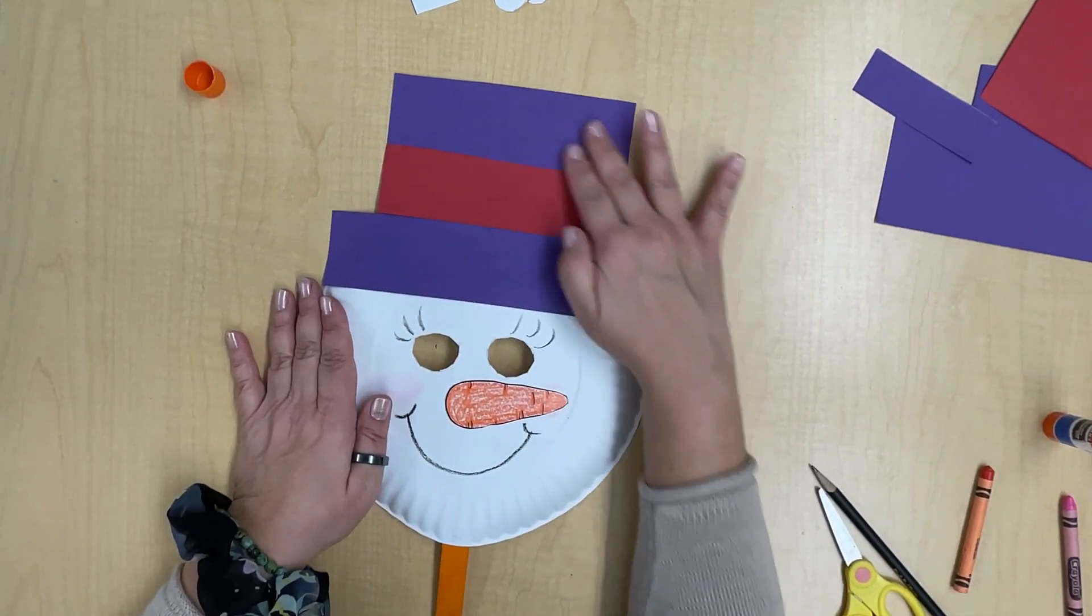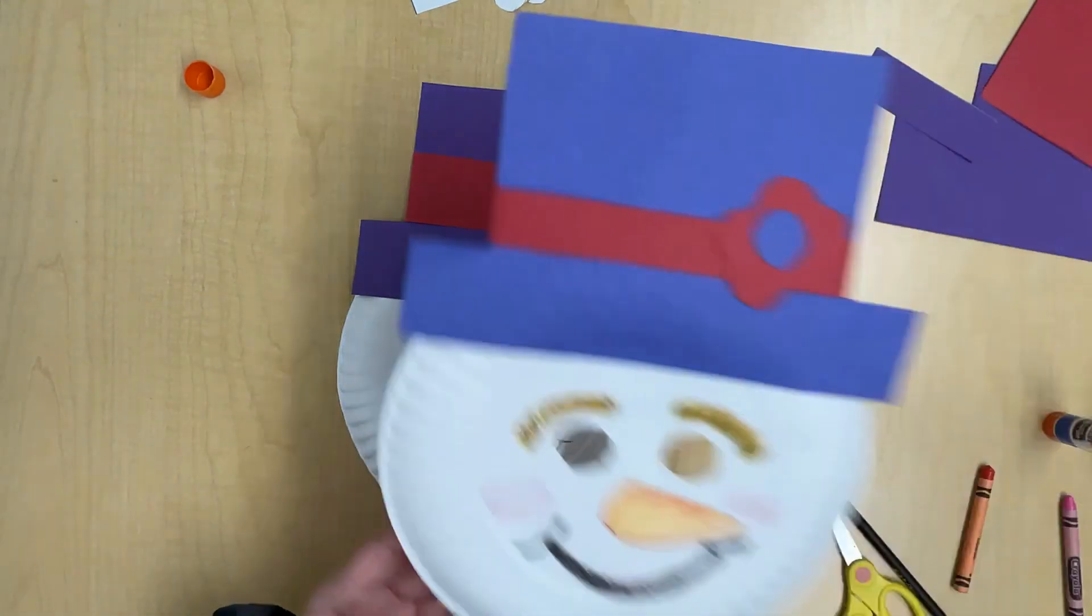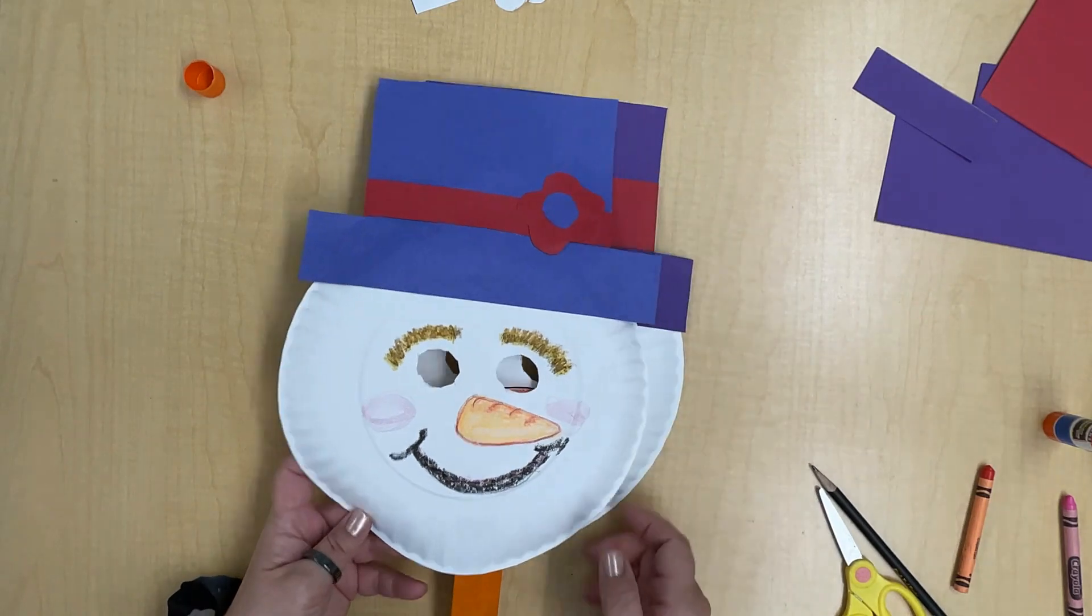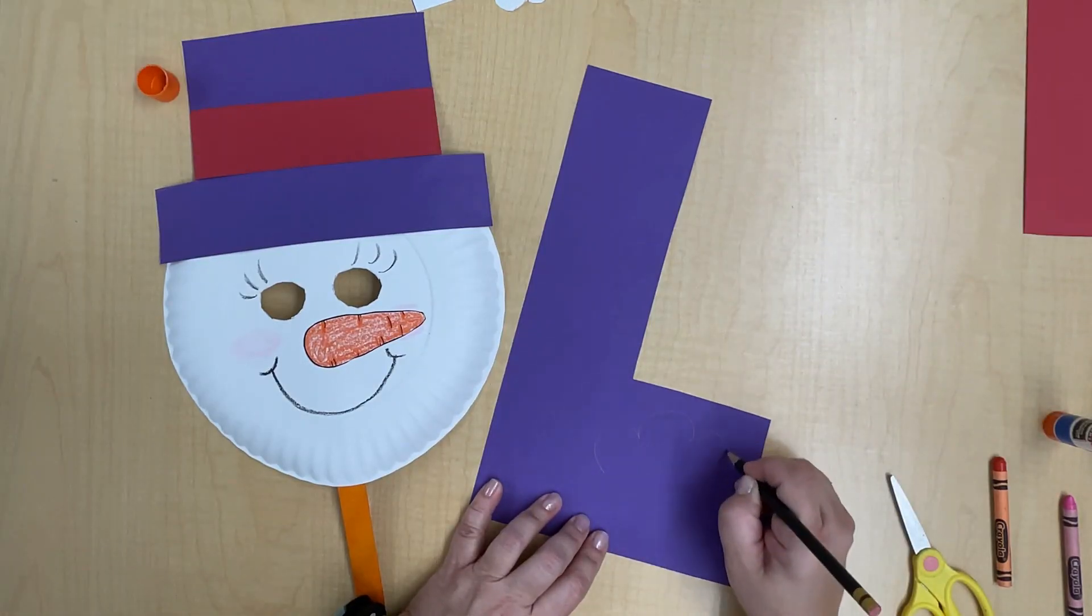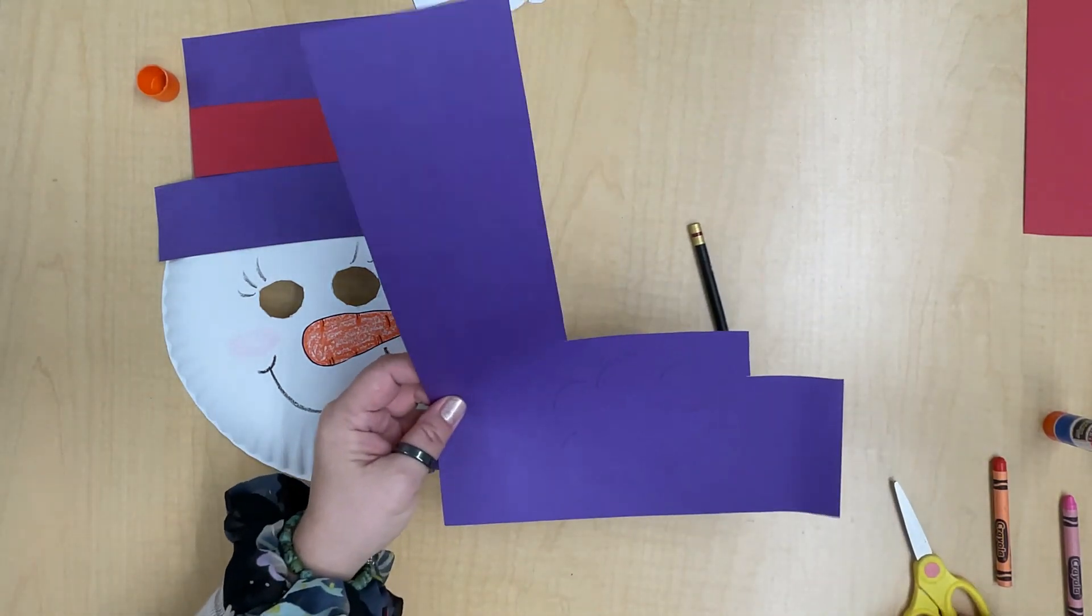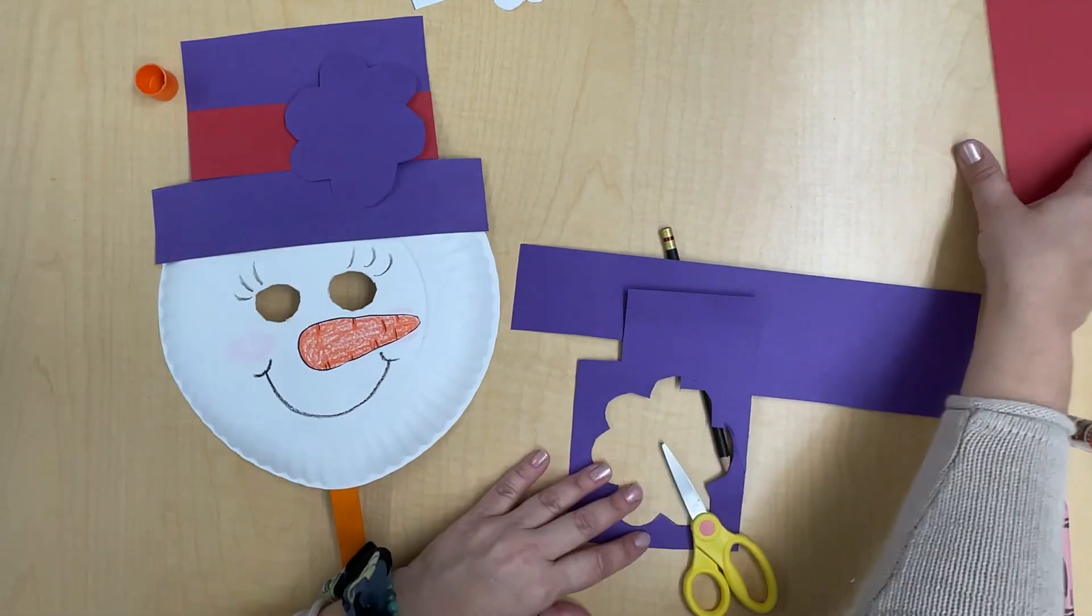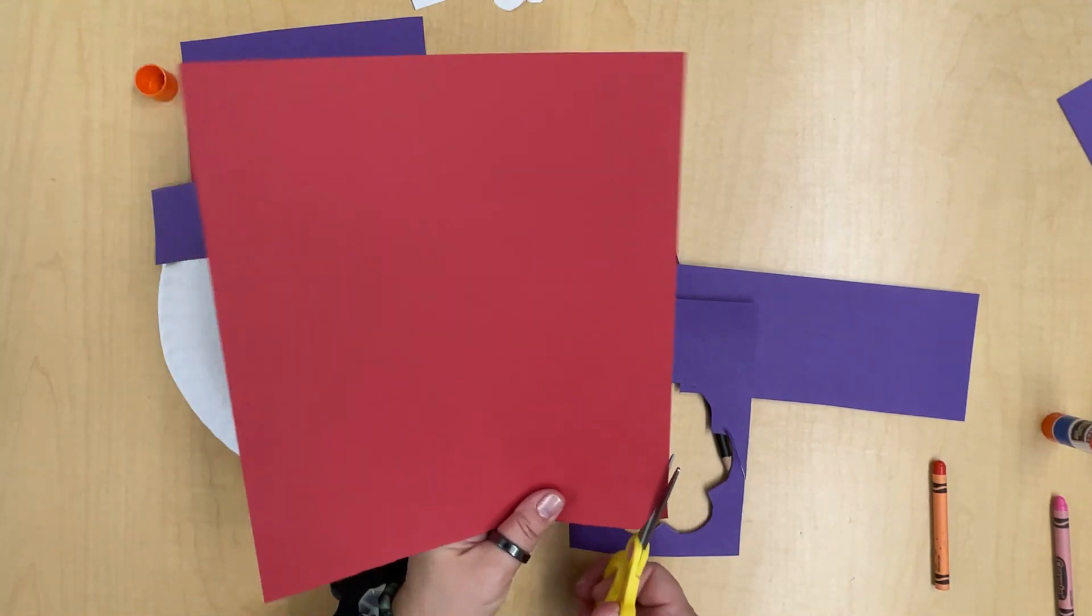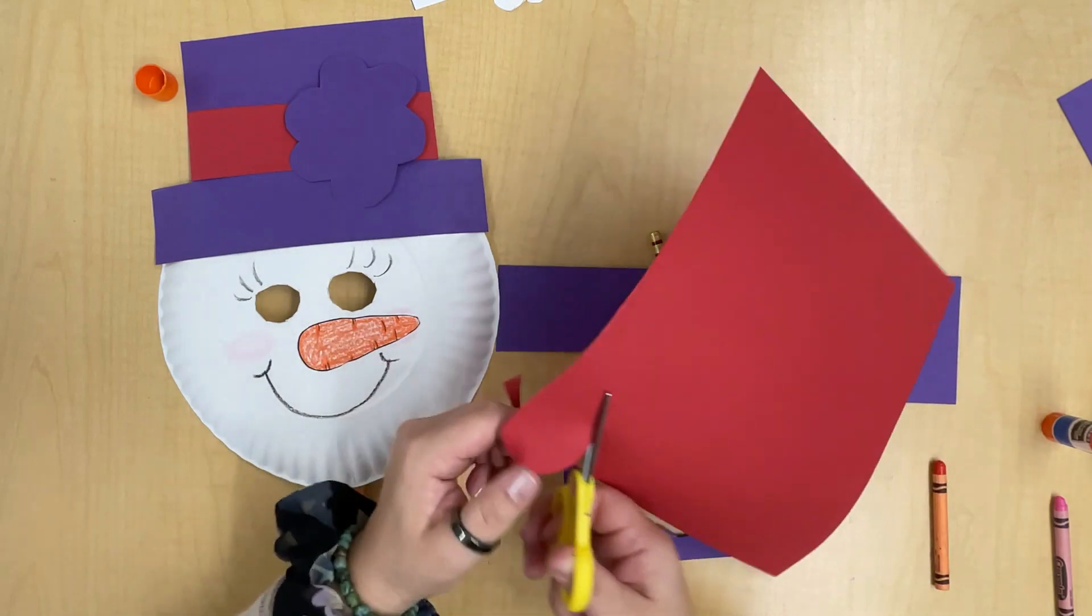If you'd like, you can make an embellishment for your snow person. Like I did with this snow person, I made a little flower there. I'm just going to make little scallops and that's going to be my flower. Then I'll make a little circle. You can draw it, you can just cut it out. It doesn't have to be perfect.